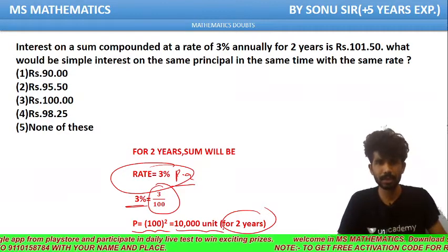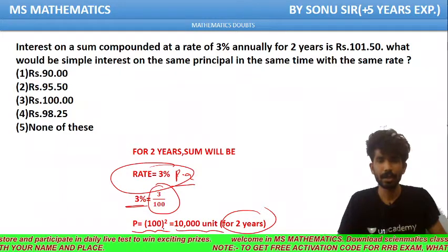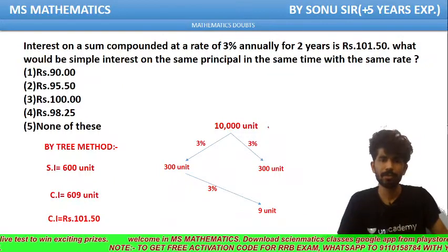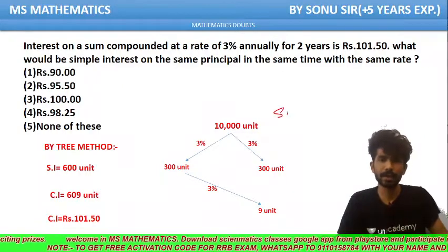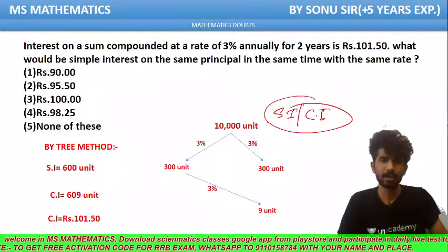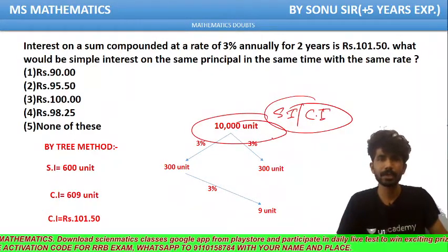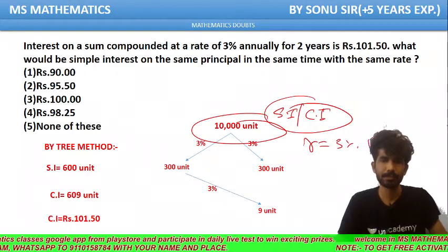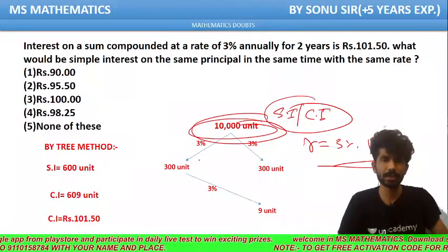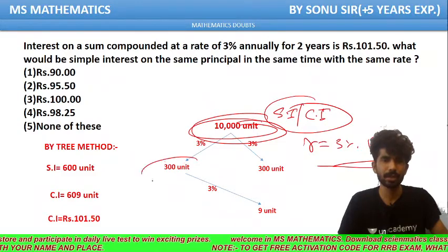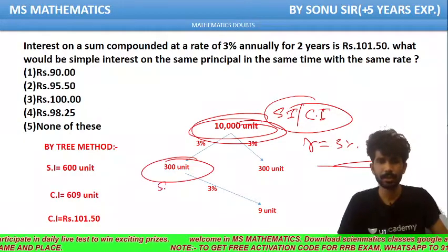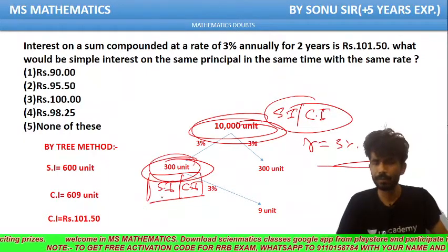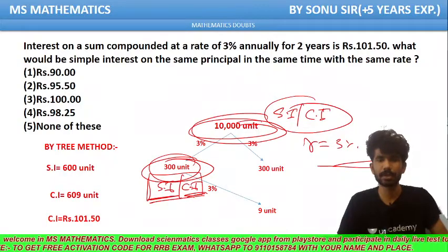If we were to find for 3 years, the principal would be 100 cubed. Now we have to find the simple interest and compound interest on the sum of 10,000 units. The rate is 3% per annum. For the first year, simple interest on the sum equals 300 units, and compound interest also equals 300 units, because for the first year simple interest and compound interest remain the same.